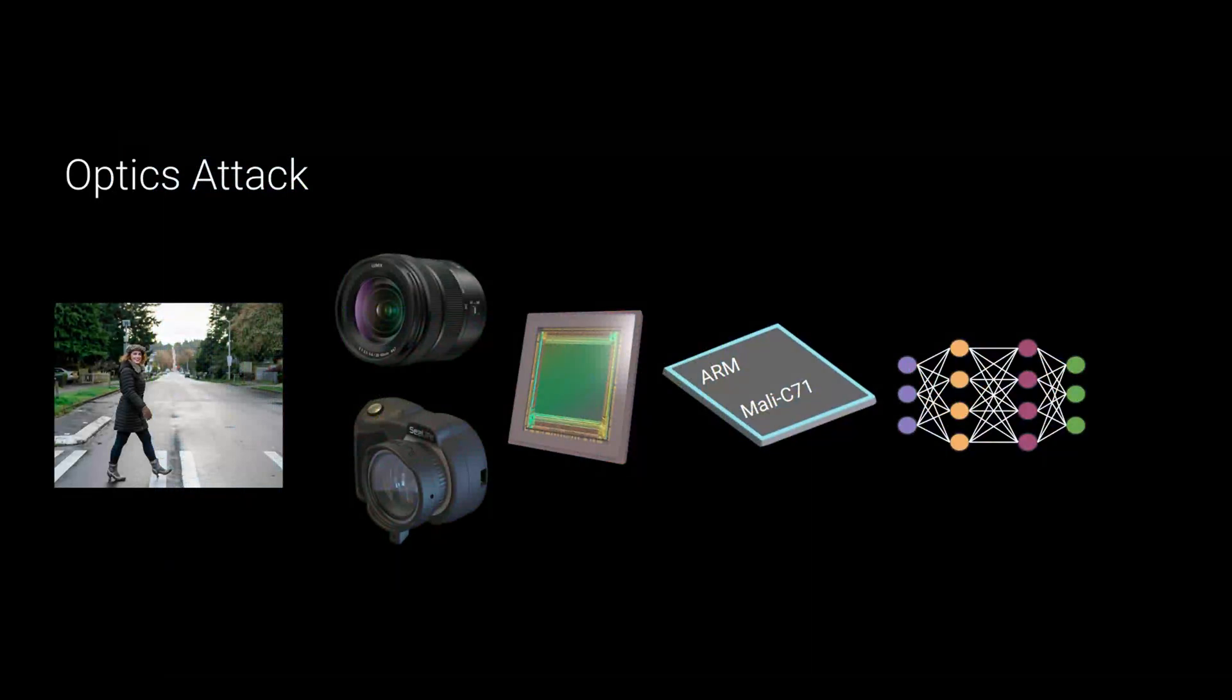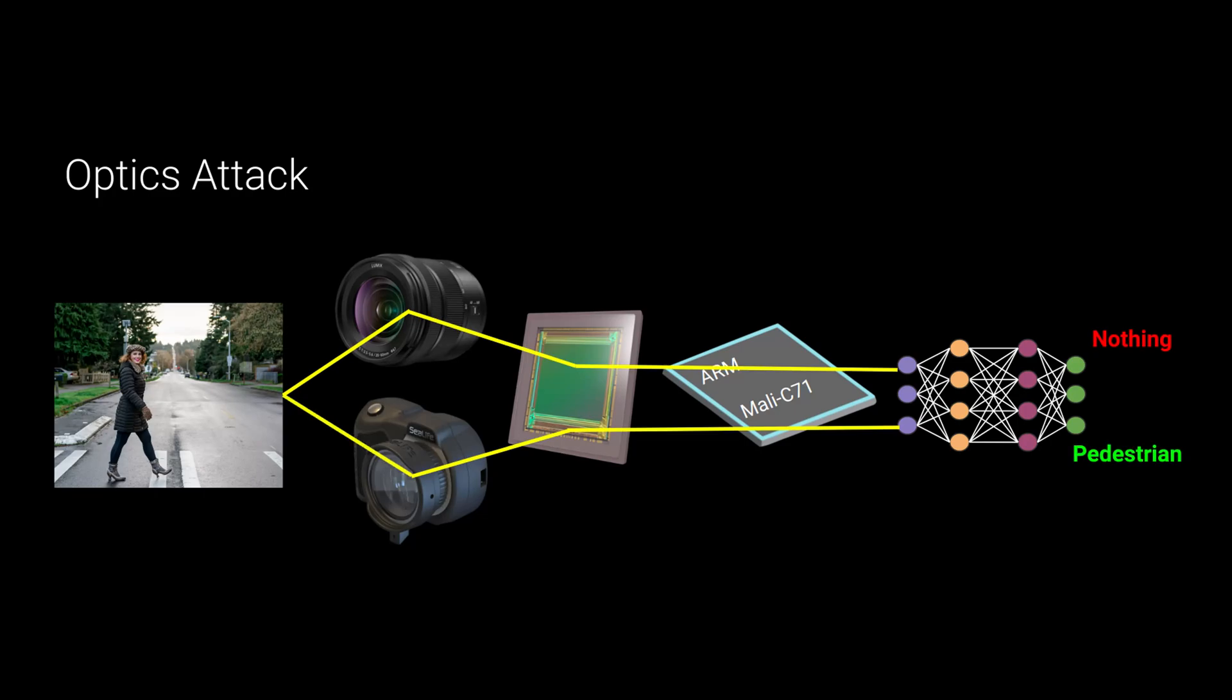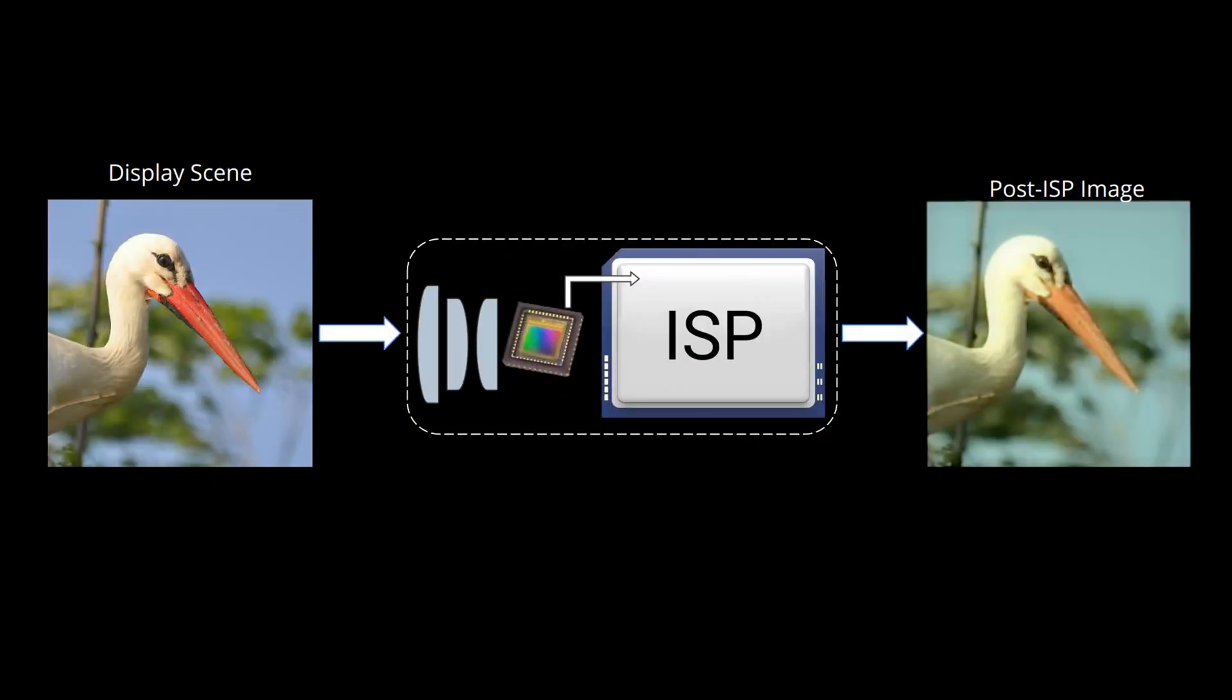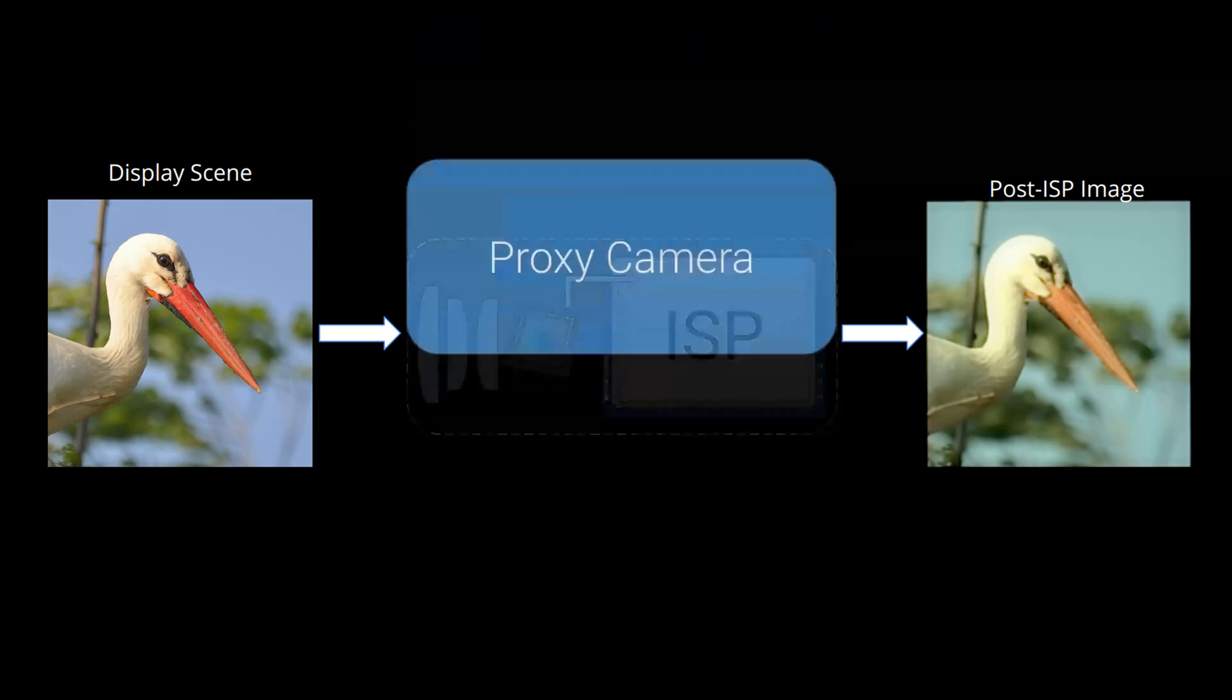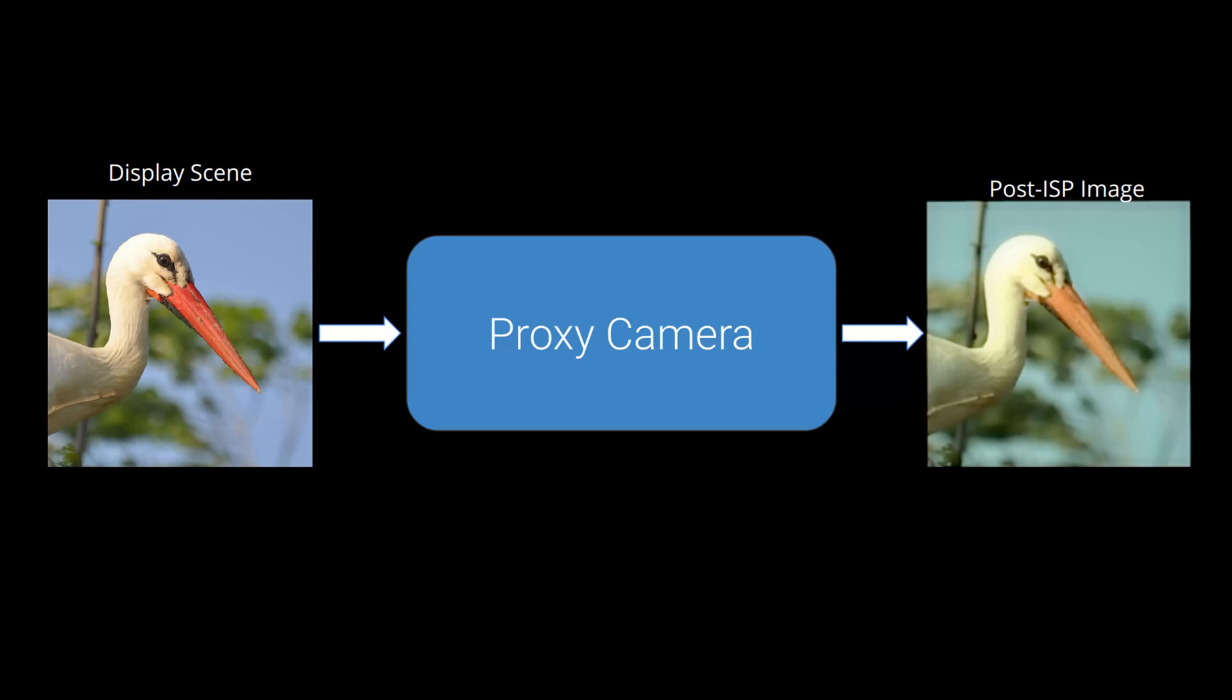We have also extended the proposed method to target camera lens, a compound optical system, instead of the camera hardware ISP. The modified optics proxy function now models the entire transformation from the displayed image to optics, sensor, and ISP that produces the final RGB image input to the image classifier.